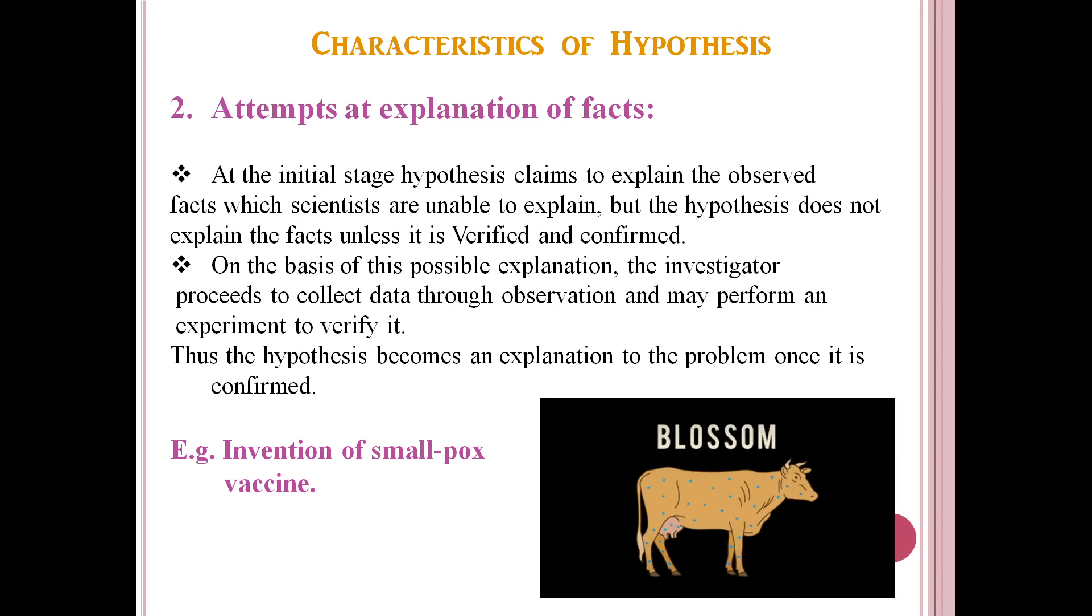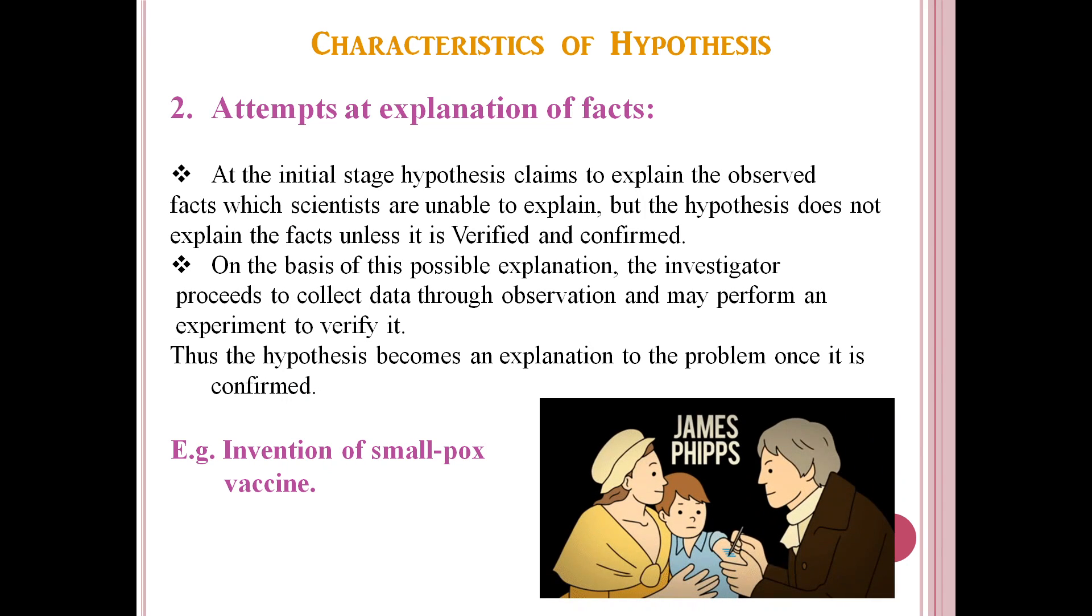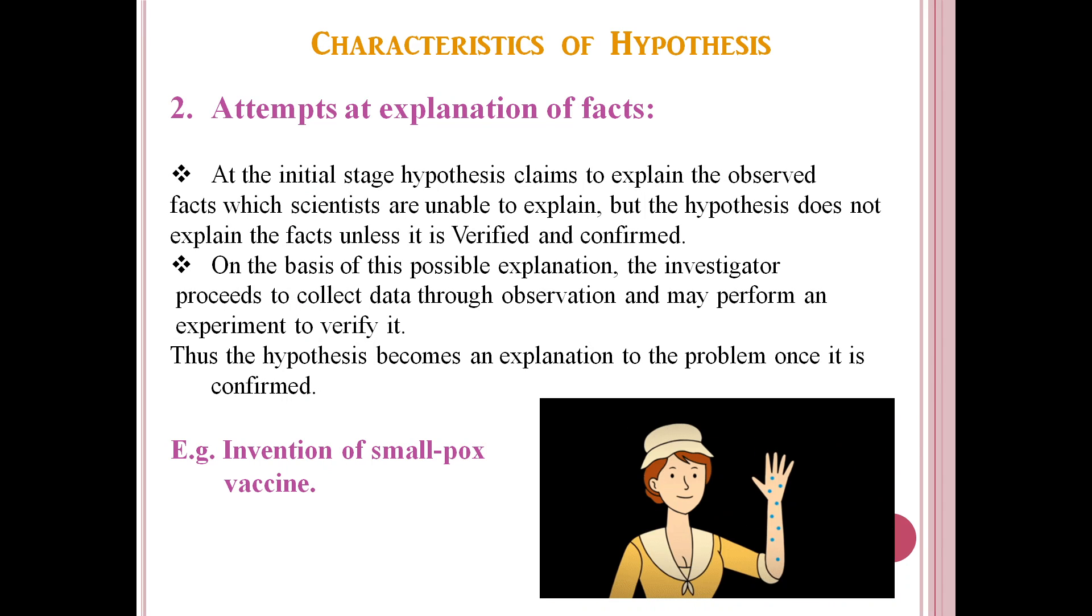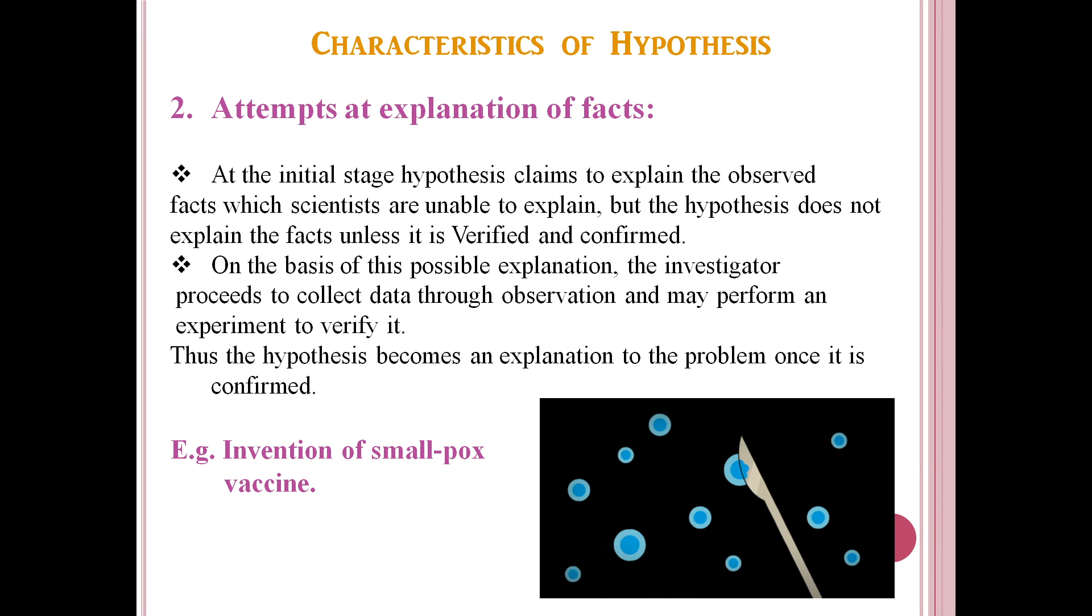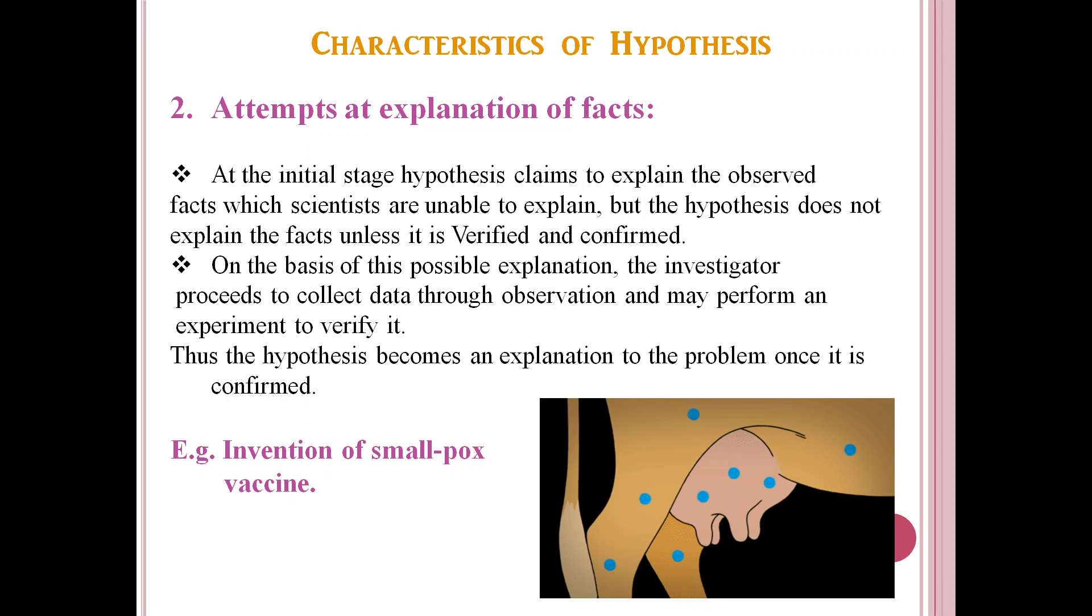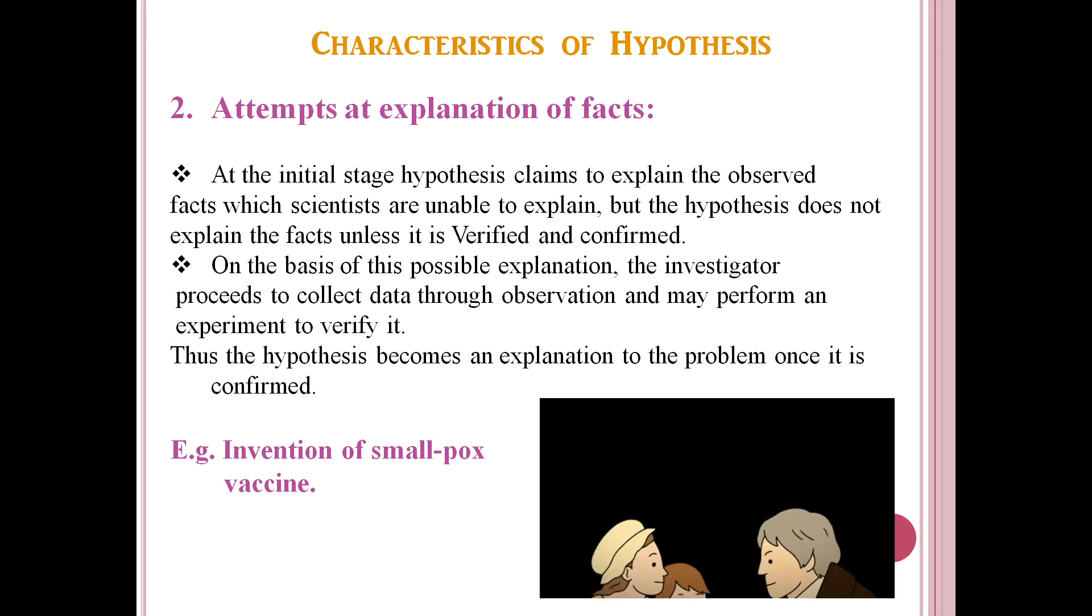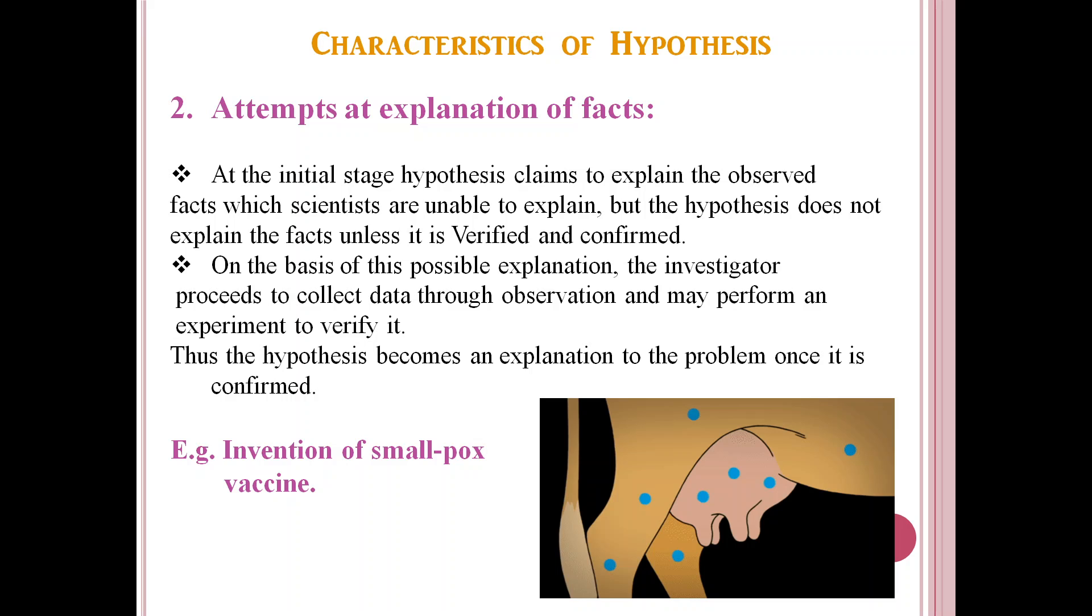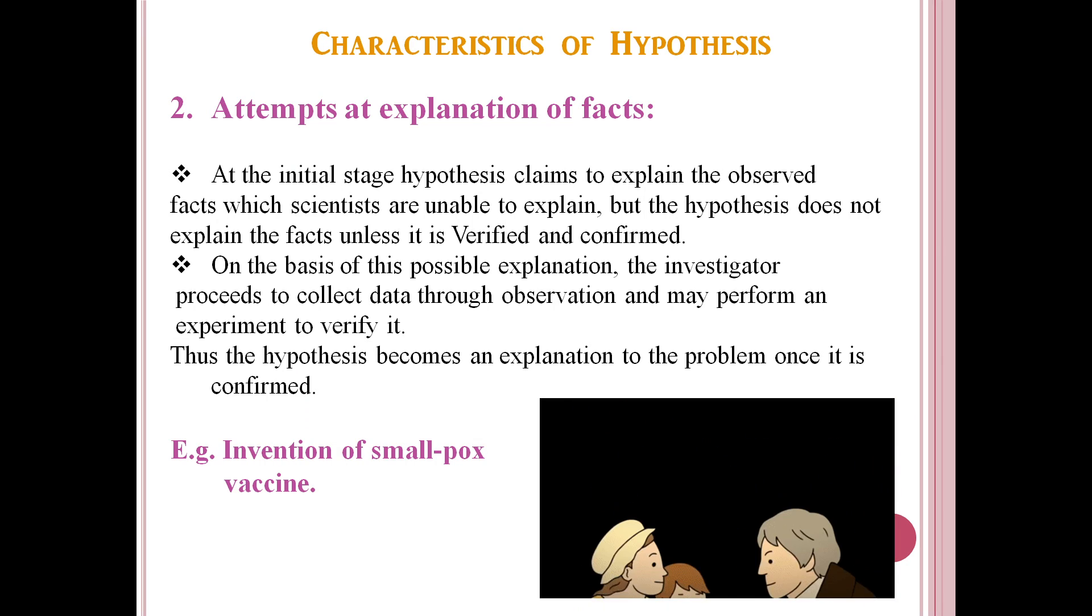So, Edward Jenner performed an experiment. He extracted the pus from the blisters of the milkmaid and injected it in the body of a young boy. Then he observed that the boy did not develop smallpox. Hence, his hypothesis, which was an attempt made, was proved to be true and it became an explanation to the problem.